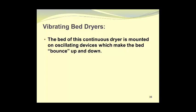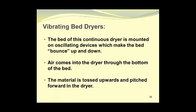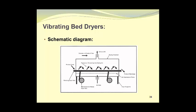For vibrating bed dryers, the bed of this continuous dryer is mounted on oscillating devices which make the bed bounce up and down. Air comes into the dryer through the bottom of the bed, and the material is tossed upwards and pitched forward in the dryer. Here is a rough schematic diagram showing the vibrating mechanism at the bottom. The product feed is at the left side, the product is thrown up into the drying air and moves along through the dryer, and is discharged at the right-hand side. Air distribution plates ensure uniform distribution of the heated air from the bottom of the dryer, and the exhaust air leaves through the stack at the top of the chamber.